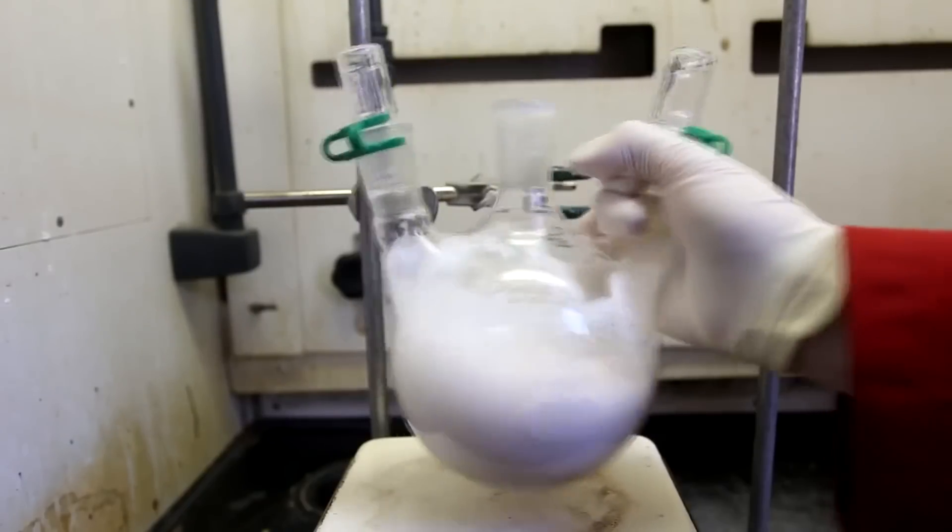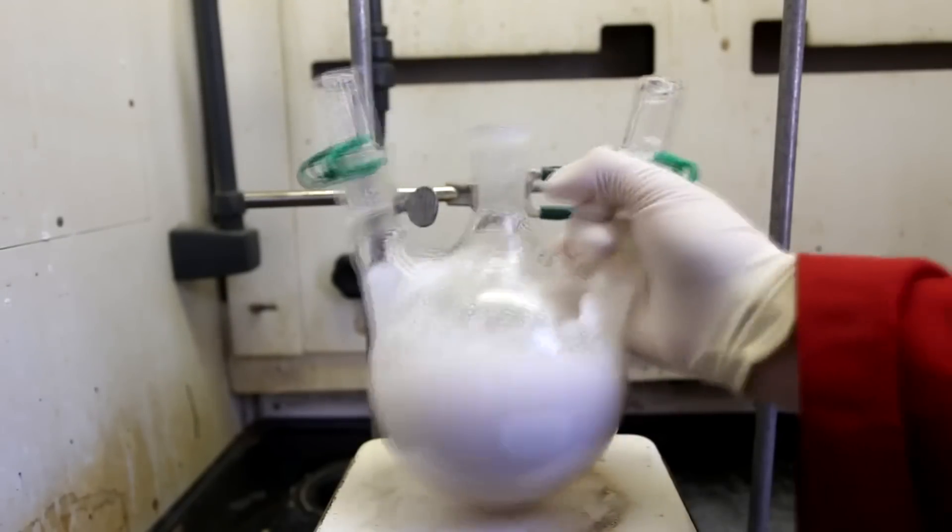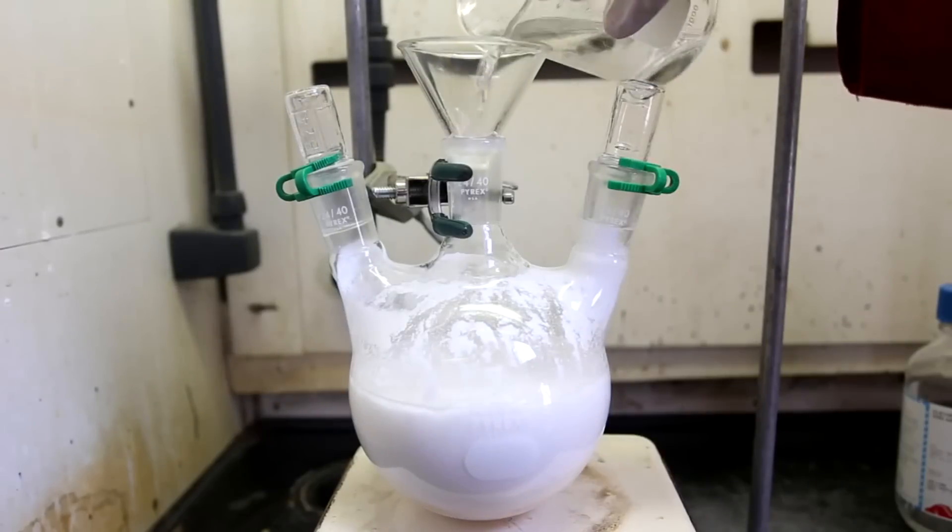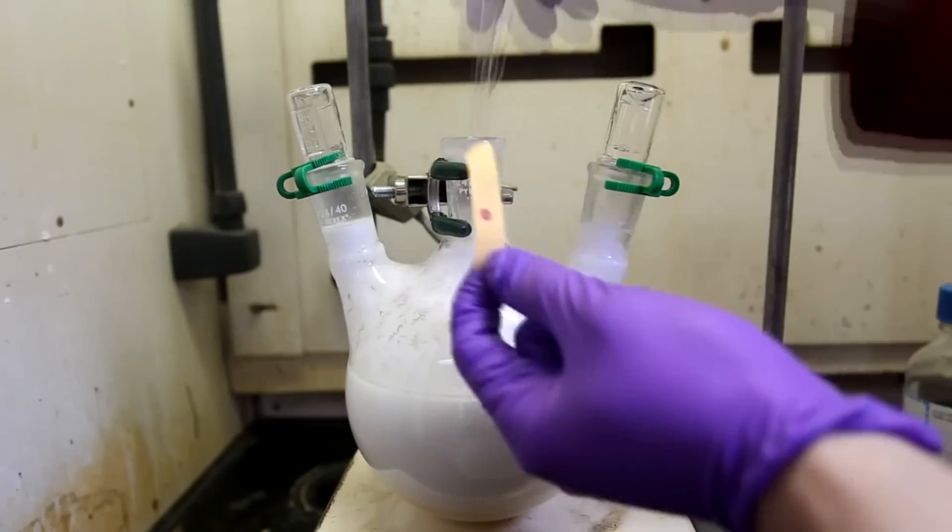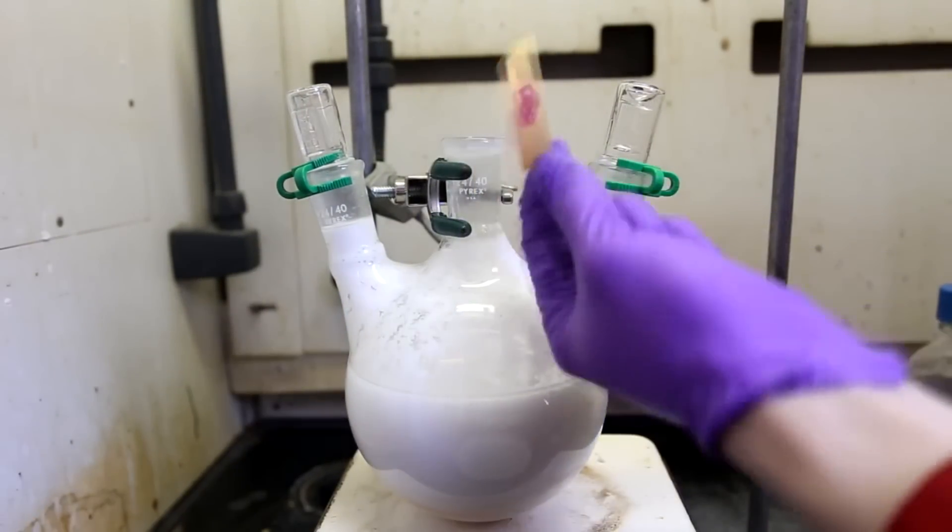The pH was checked periodically and the addition of hydrochloric acid was stopped once the pH reached about zero. By the time the pH had reached zero, the solution had become a thick sludge full of salicylic acid precipitate.